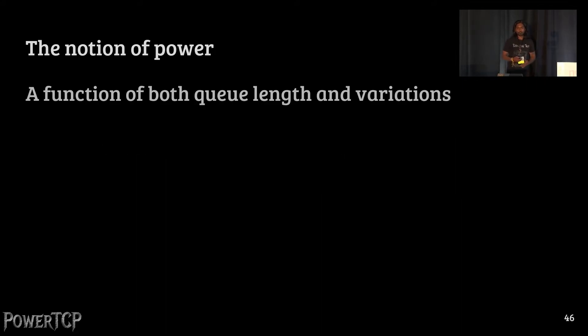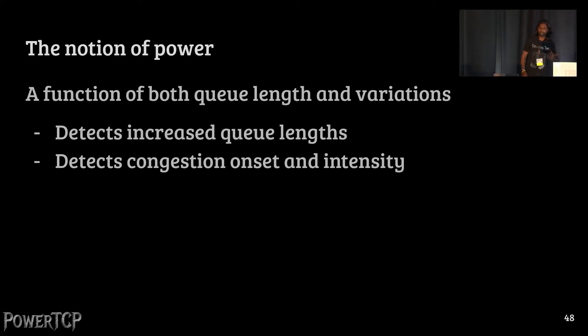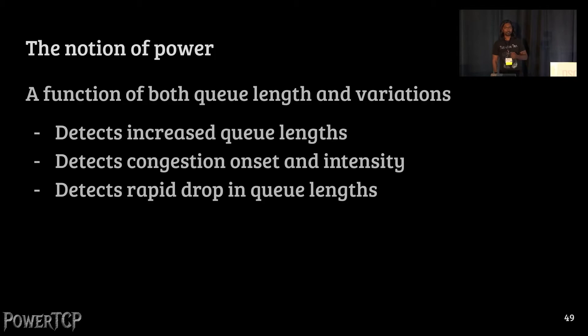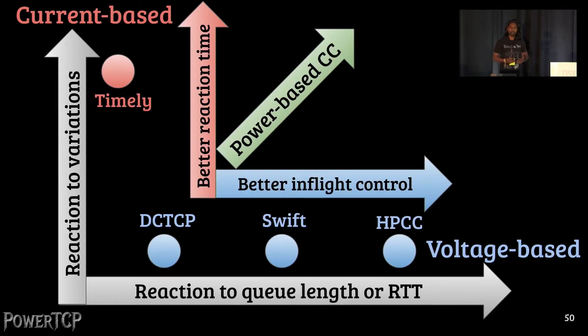The notion of power indeed has quite some good benefits. It's a function of queue length and its variations. As a result, it can detect increased queue length as well as congestion onset and intensity. It can even detect rapid drop in queue length, for instance, to avoid throughput loss. So overall, the notion of power now reveals a whole new dimension for congestion control algorithm design. And within this space, we propose PowerTCP, which is based on the notion of power.